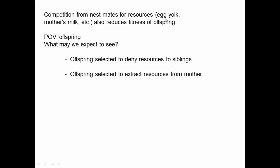For example, in organisms that lay eggs but don't have parental care, we can consider the amount of yolk in the eggs to be resources. Or for mammals, the amount of milk, or for birds, the number of worms that they bring to the nest. Competition from nest mates for resources also reduces the fitness of offspring, which we saw in the example with the birds, where clutches that had been artificially reduced resulted in higher fitness offspring.